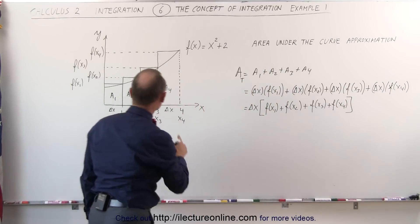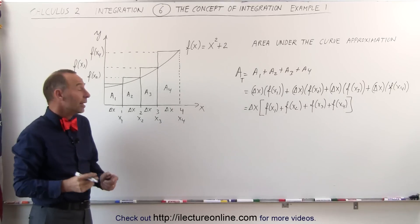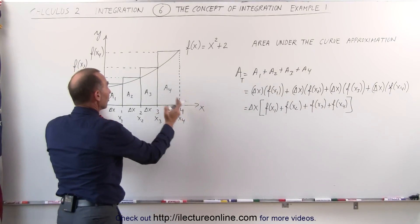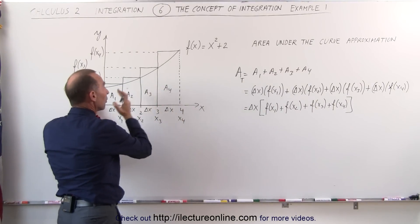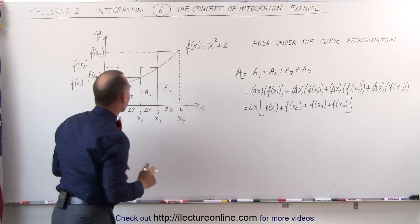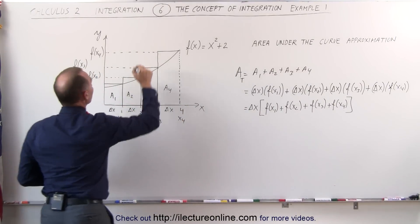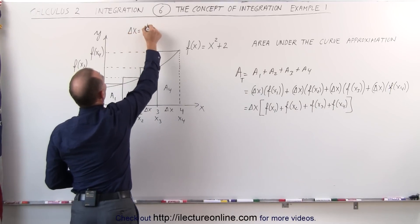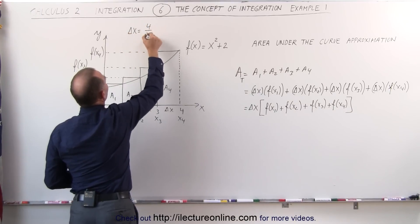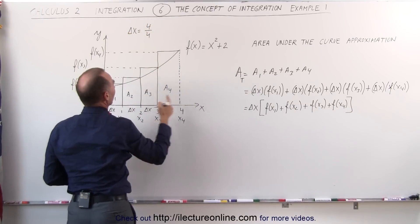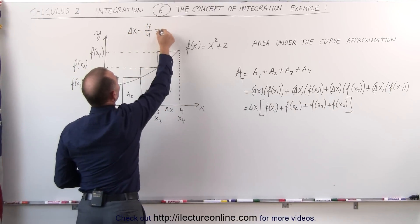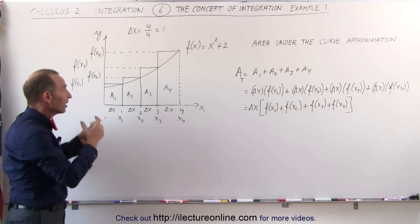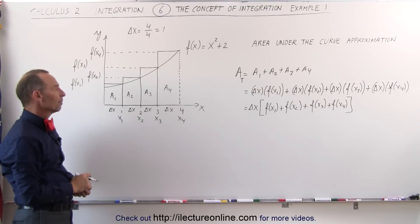What is delta x equal to? Delta x will be equal to the total width divided by the number of rectangles. In this case, delta x equals 4 divided by 4, which is equal to 1. And of course, by inspection, we can see that's the case.